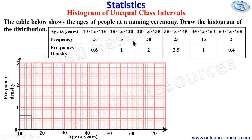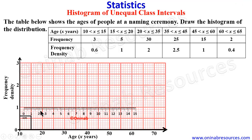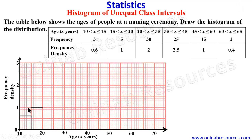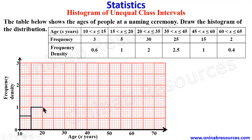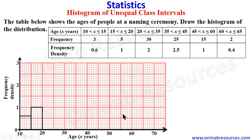For 15 to 20, the width is also 5. We identify the height of the bar, which is 1. We place our ruler and draw across. Remember the width is 5, so it ends at 20. We then join this down to get the bar, completing the second bar representing the second class interval.